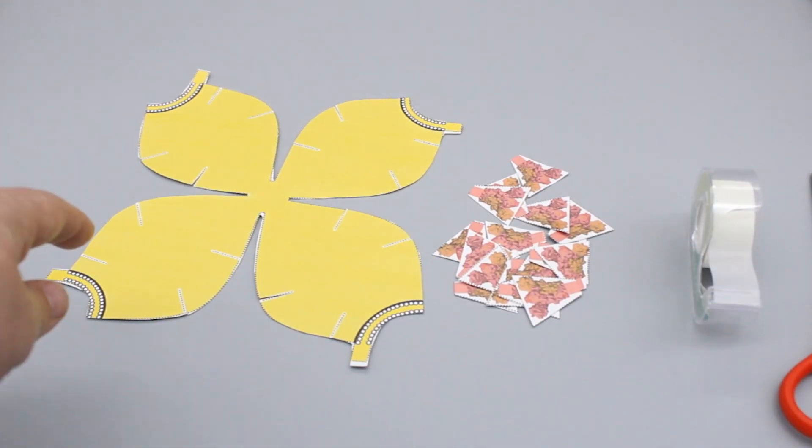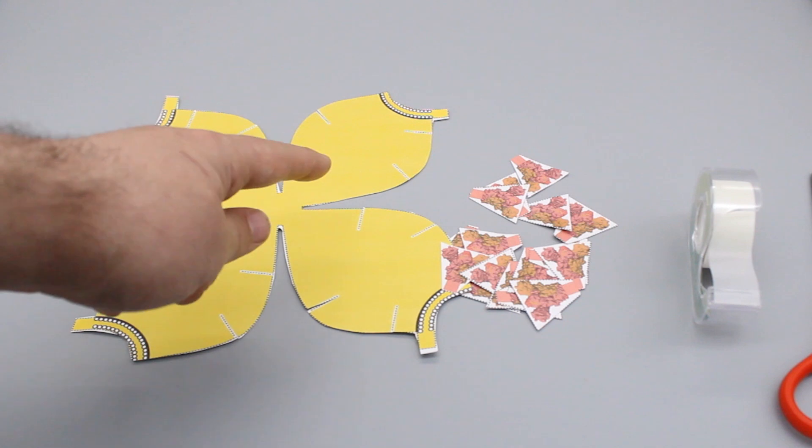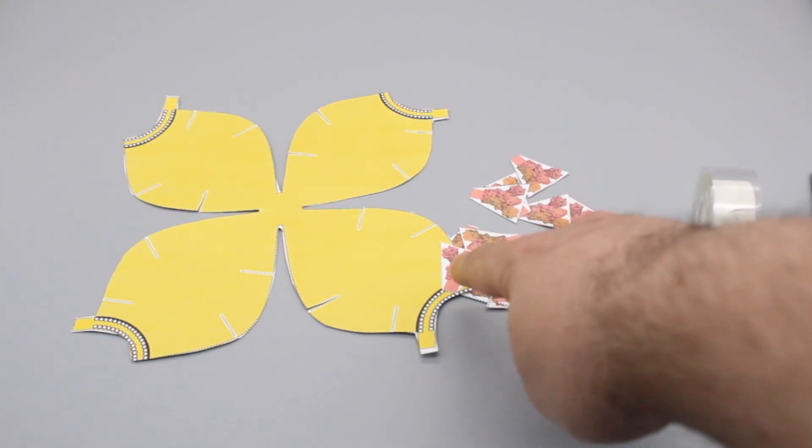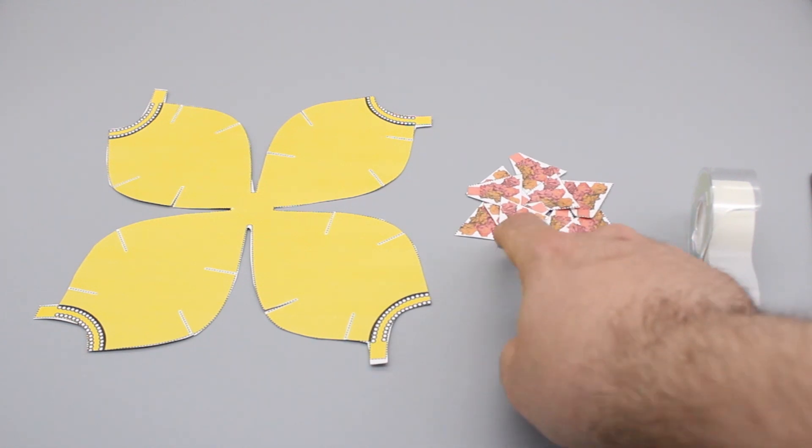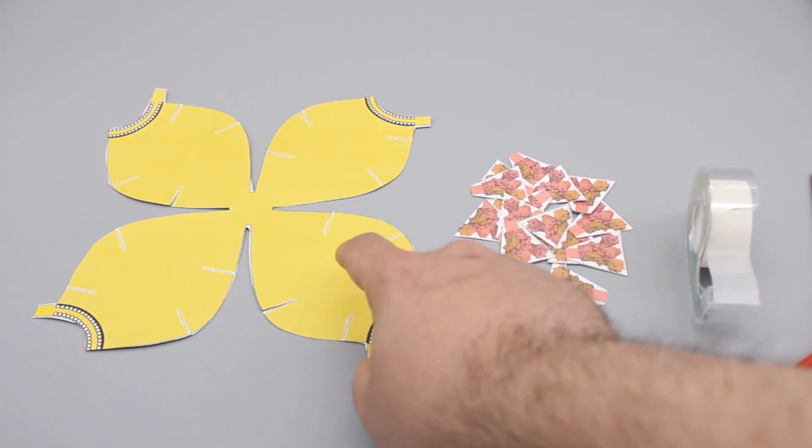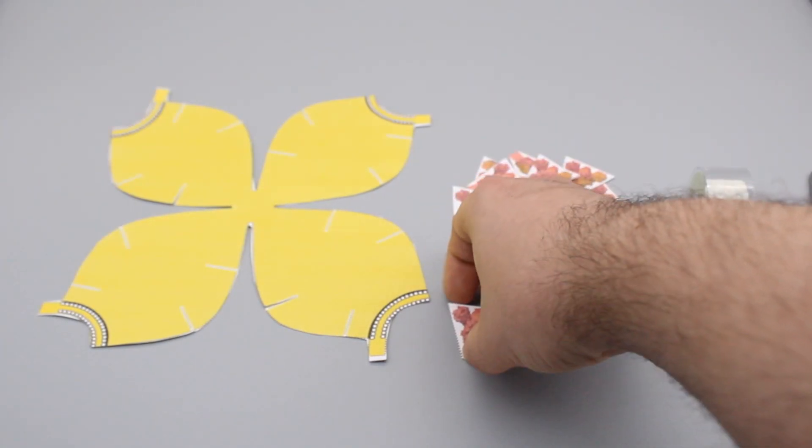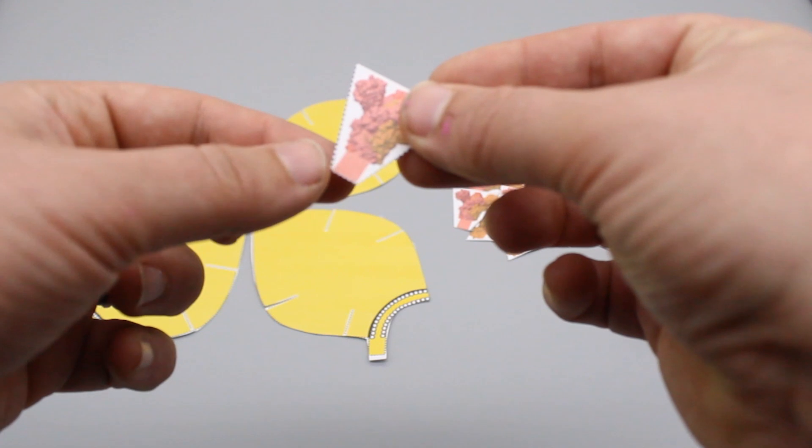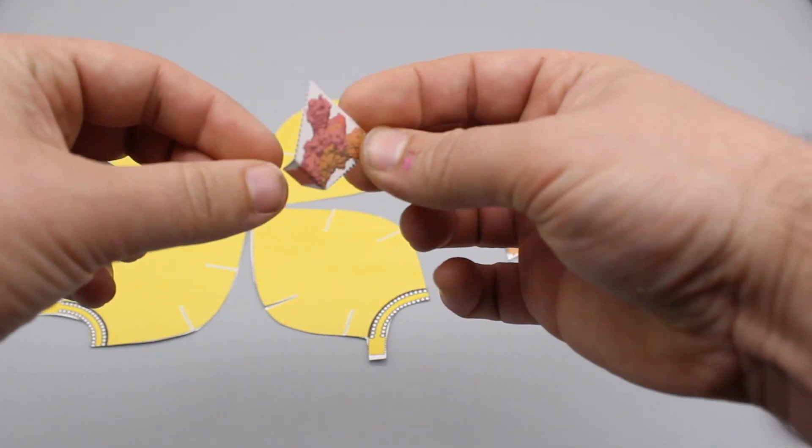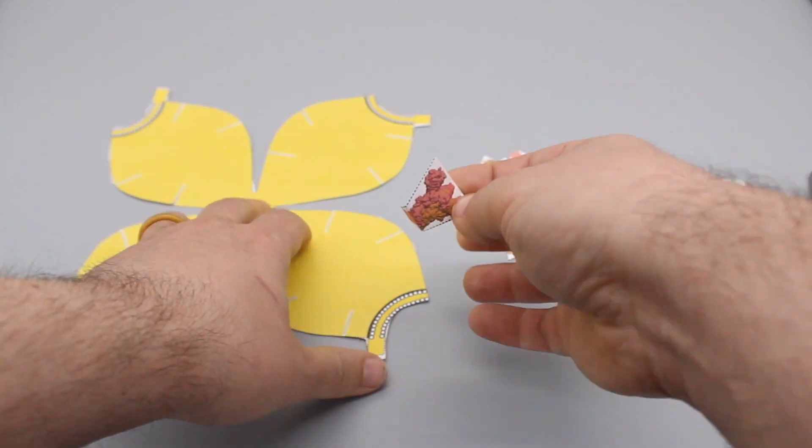So at this point we have our yellow component which is going to be our virus envelope or membrane, and then we have all these little triangular shaped magenta pieces. These are all of our spike proteins that are going to be on the outside of our membrane. And so the next step is to attach our spike proteins. Start by taking one of these small spike proteins and bend just the bottom of it right about like that.